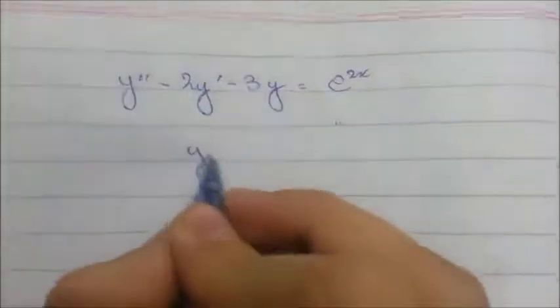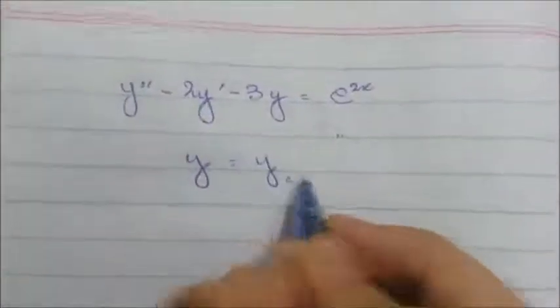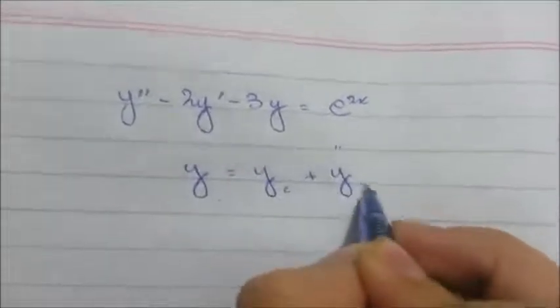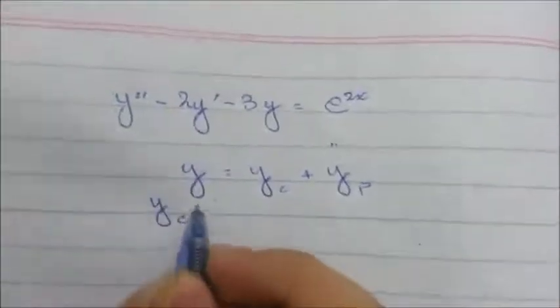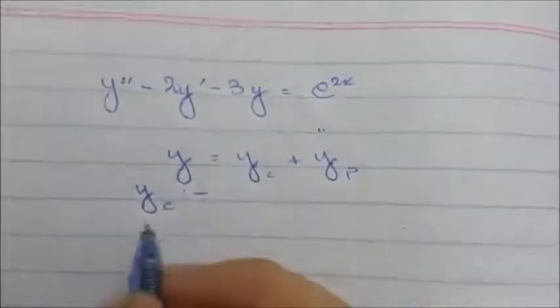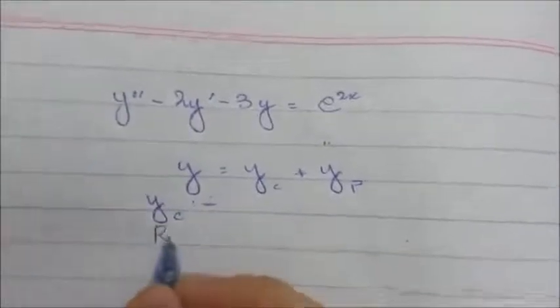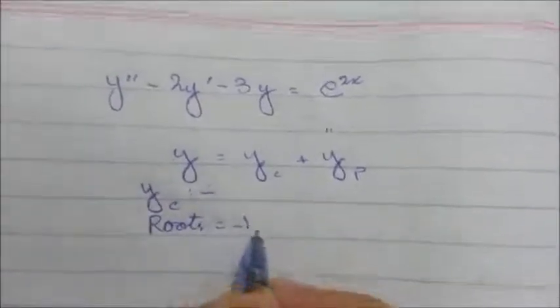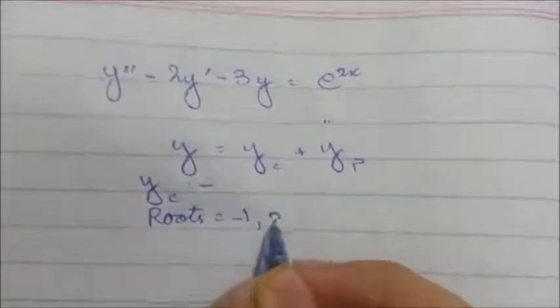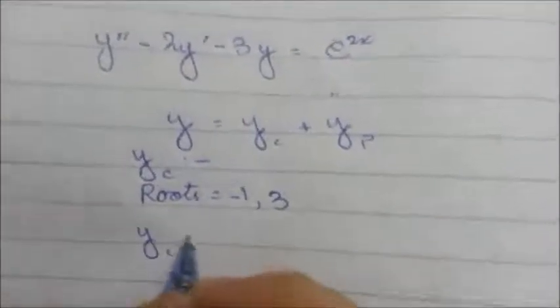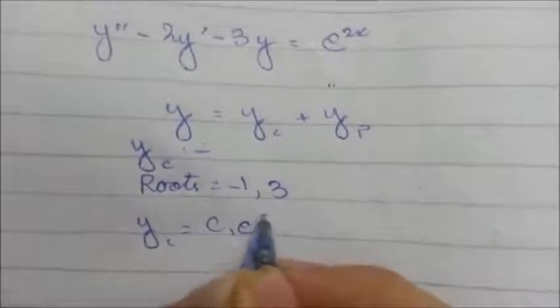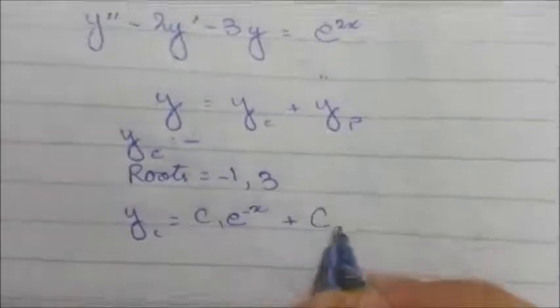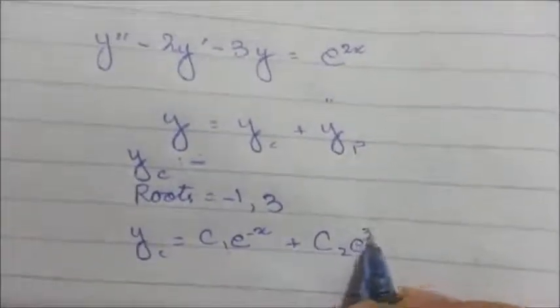For that, as we know, y is always equal to yc plus yp. First, we will find the yc of the equation. So, the roots of this equation will be -1 and 3. So, yc will be c1e^(-x) + c2e^(3x).